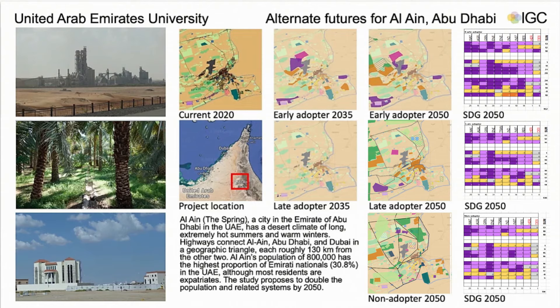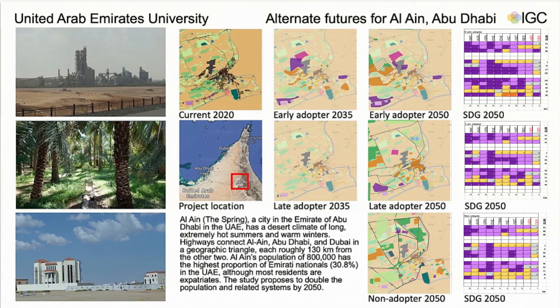My name is Meera Ziyoudi, and I will complete what my colleague started. We came up with three different designs: the early adopter, the late adopter, and the non-adopter. In the first design, the involving of the innovations starts in 2020, resulting by 2035. The growth was around the previous center — residential areas and some industrial areas — continuing until 2050 around the previous center in the northern side.